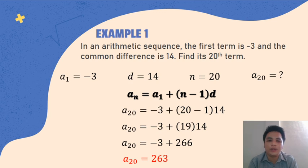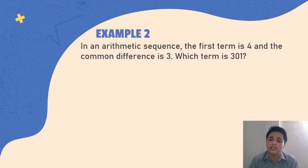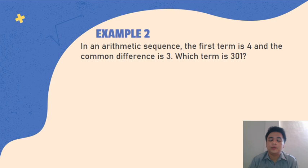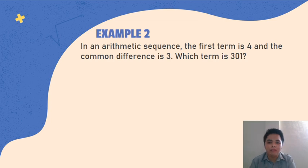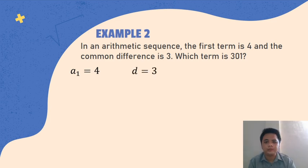Let's proceed to Example number 2. In an arithmetic sequence, the first term is 4 and the common difference is 3. Which term is 301? So dito naiiba — the question is asking pang ilang term yung 301. So, A sub 1 equals 4, d equals 3, and A sub n equals 301. The question is asking for the position of that term, so hindi hinahanap yung number itself — ang hinahanap is the value of n.